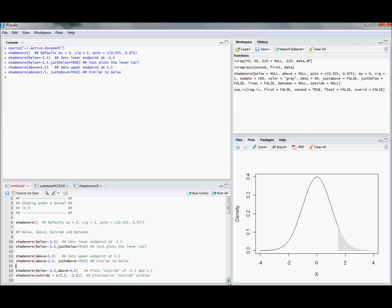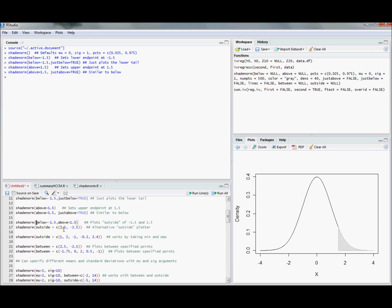If you wanted to have flexibility on both endpoints, you can use these two arguments in tandem. So we can go below negative 1.5 and above 1.5, and that shades, in your mind you might say that's outside of the interval minus 1.5 to 1.5.